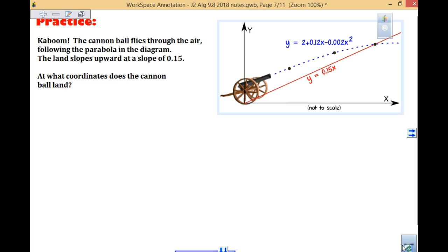Next question. A cannon fires into the air following the parabola in the diagram. The land slopes upward at a slope of 0.15. What coordinates does the cannonball land at? When is the cannon going to hit the land? First thing we want to be thinking about is what are our two equations. How do we want to do this, substitution or elimination? Substitution. I would definitely say substitution. I would put this 0.15x equal to this whole equation. I am going to put 0.15x equals 2 plus 0.12x minus 0.002x squared.